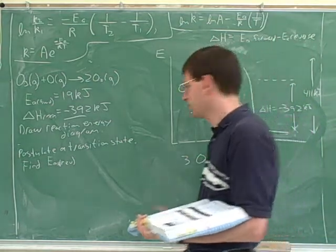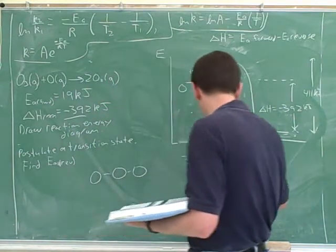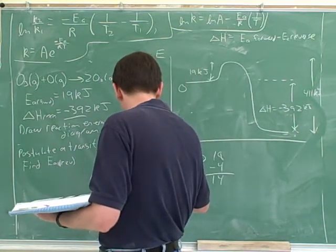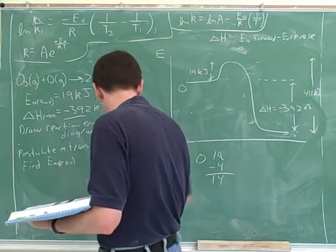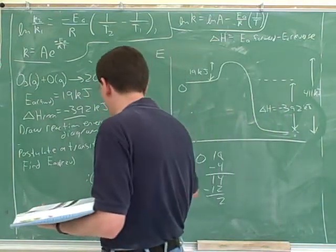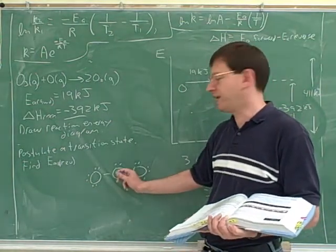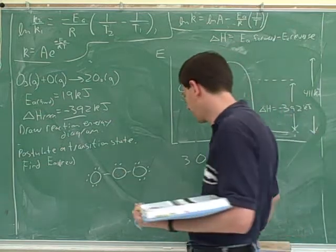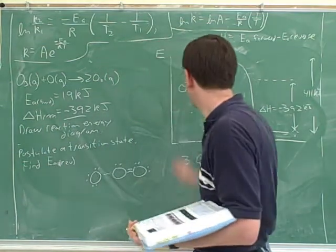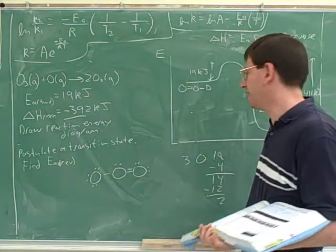If I put in two bonds, that uses up four electrons, which leaves me with 14. Then I can put 12 electrons around the outer atoms, which leaves two electrons for the central atom. I want everyone to have an octet, so I need to take this lone pair and make it into another double bond. That tells us that ozone has one double bond and one single bond. So over here I have an ozone with one double bond and one single bond.